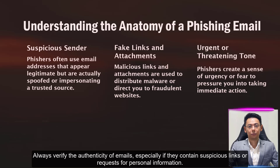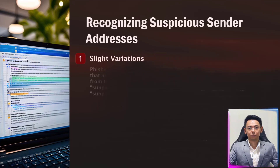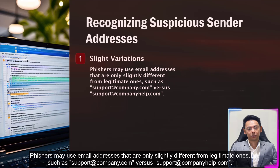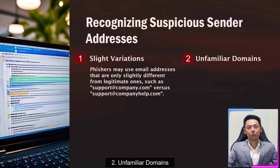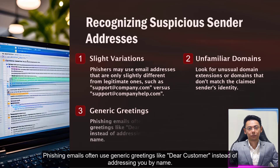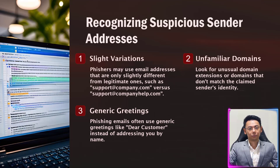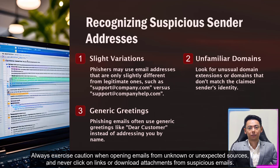Always verify the authenticity of emails, especially if they contain suspicious links or requests for personal information. When recognizing suspicious sender addresses, look for slight variations — phishers may use email addresses that are only slightly different from legitimate ones, such as support@company.com vs support@companyhelp.com. Look for unfamiliar domains with unusual domain extensions that don't match the claimed sender's identity. Phishing emails often use generic greetings like 'Dear customer' instead of addressing you by name. Always exercise caution when opening emails from unknown or unexpected sources, and never click on links or download attachments from suspicious emails.